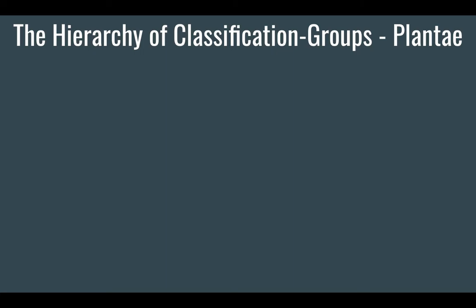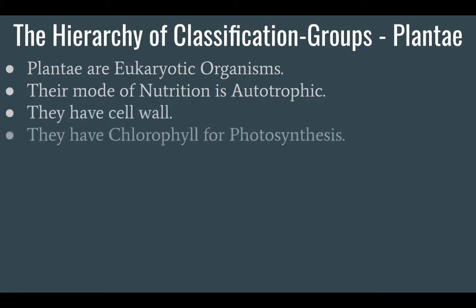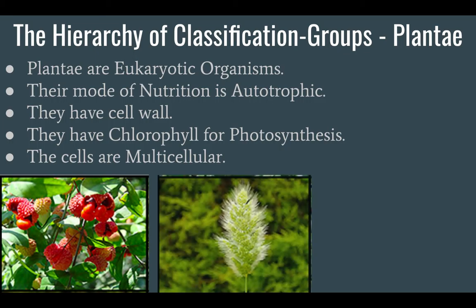Plantae is all about plants. Plants are eukaryotic organisms — eukaryotic means they have nuclei and membrane-bound cell organelles also present. Their mode of nutrition is autotrophic, meaning they make their own food. They have cell walls, and chlorophyll is present, which enables photosynthesis. They are also multicellular.